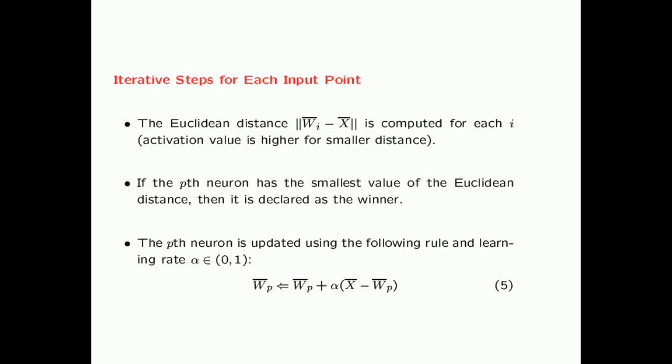The learning rate often decreases over the course of the algorithm because this is an iterative process in which you sample one point after the next and perform the update. Initially, you start with larger learning rates and gradually reduce them over time. This is not very different from how the learning rate is treated in many other types of neural network learning.